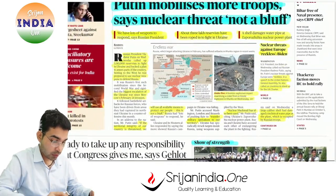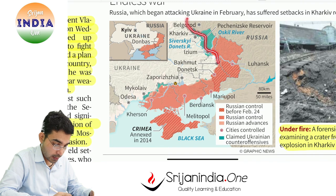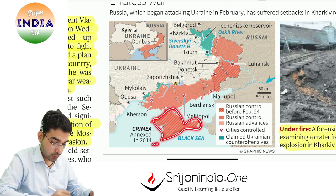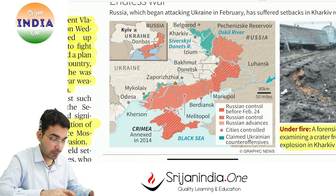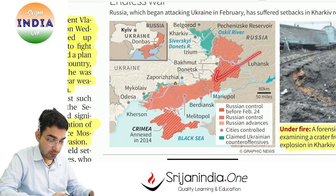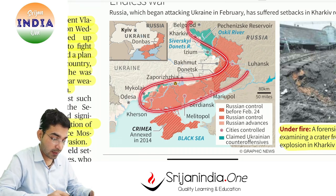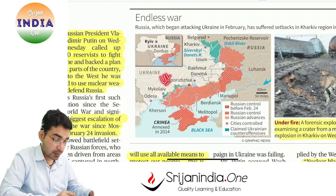Let us wait and watch — our Ministry of External Affairs' official position will be key. Russia-Ukraine geography: this is Russia, this is Ukraine, here is the Black Sea, and this is the Crimean Peninsula — annexed by Russia in 2014. The Luhansk region is also shown — Russia claims this area should be with Russia based on demography. Russia used the term 'special operation' rather than 'invasion' when it entered Ukraine.